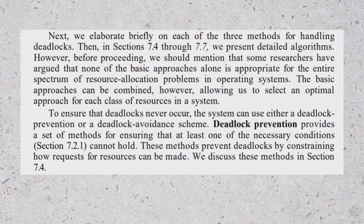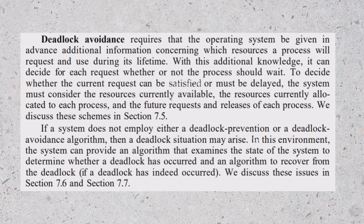Deadlock prevention provides a set of methods for ensuring that at least one of the necessary conditions cannot hold, preventing deadlocks by constraining how requests for resources can be made. Deadlock avoidance requires that the operating system be given in advance additional information concerning which resources a process will request and use during its lifetime. With this additional knowledge, it can decide for each request whether the process should wait, considering the resources currently available, those currently allocated, and future requests and releases.